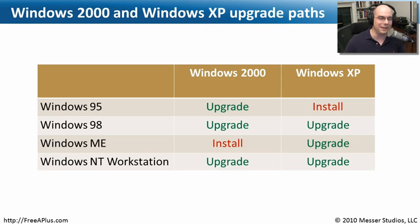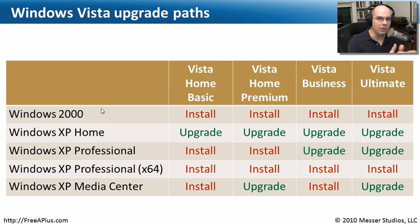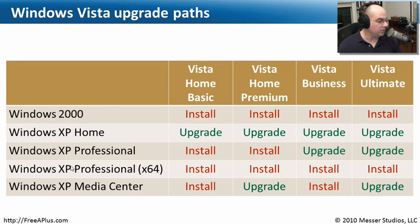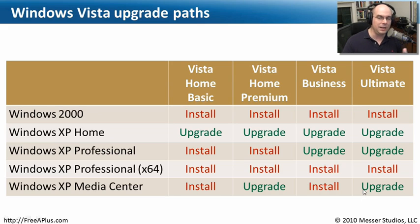Windows Vista is a bit different. Vista has many different flavors and there are many different preceding operating systems, so this is a bit of an eye chart. Fortunately, some things are universal. Windows 2000 cannot upgrade to any version of Vista — you must do a clean install. Windows XP Professional 64-bit also has no upgrade path to any Vista version. Windows XP Home, however, can upgrade to anything Vista. XP Professional can upgrade to Vista Business and Vista Ultimate. Media Center can upgrade to Vista Home Premium and Vista Ultimate.